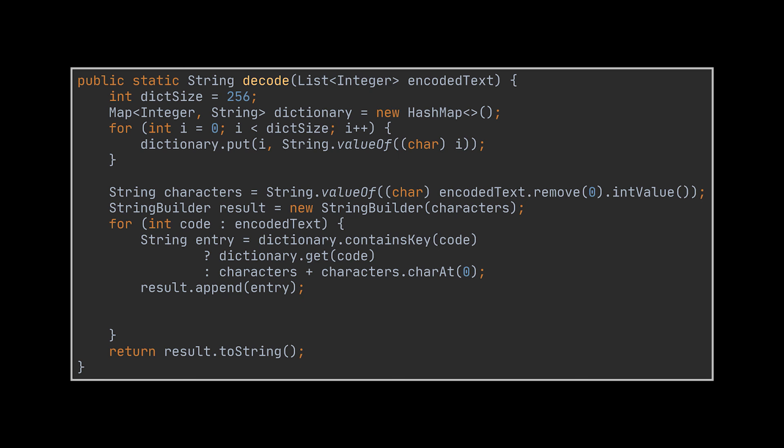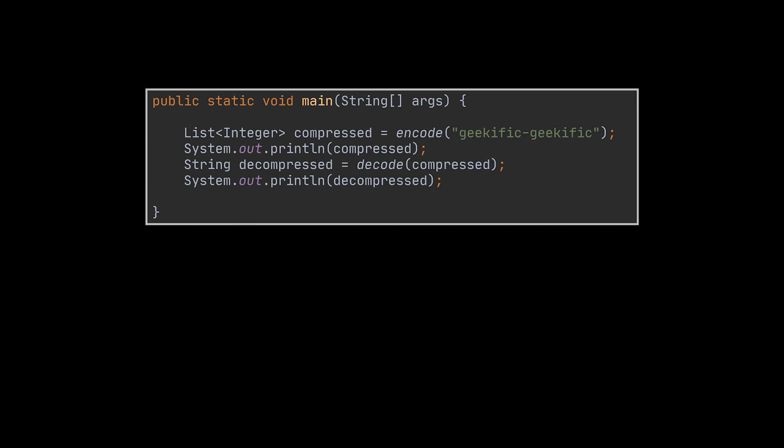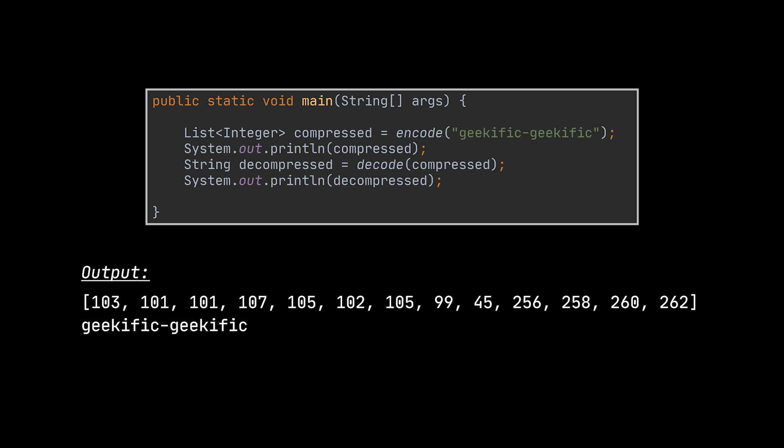The retrieved entry is appended to the resulting string. Then the first character of this entry is appended to the characters of the previous iteration and added to the dictionary, to generate the same entries as the encode operation. Finally, the characters of the previous iteration are updated to reference the current one to proceed with the loop. To see our implementation in action, I created a main method and invoked both the encode and decode methods. Using the same example from the beginning of the video, the printed codes are exactly as expected.